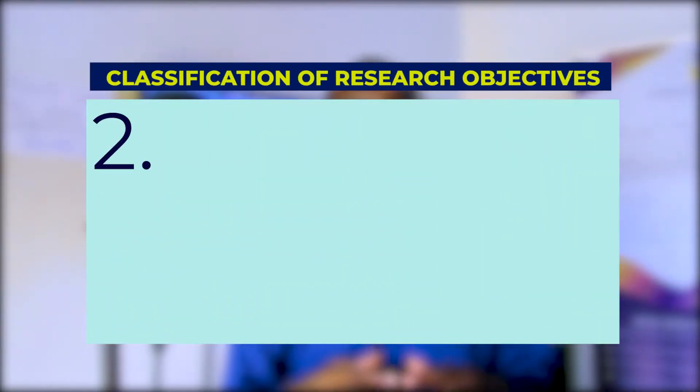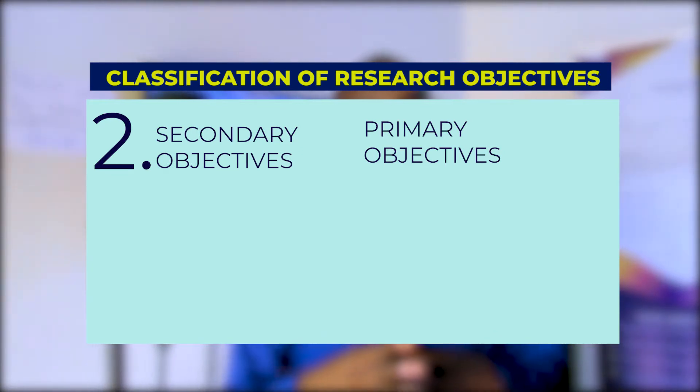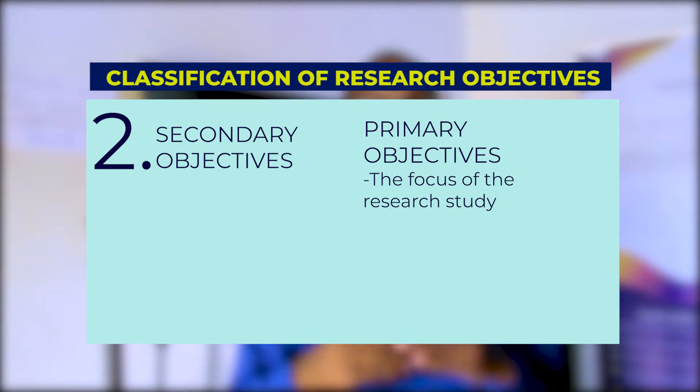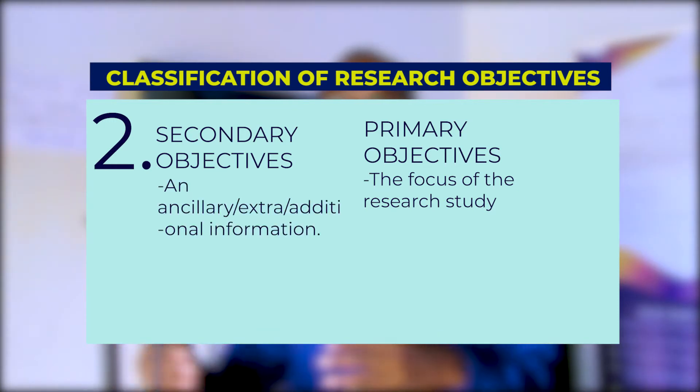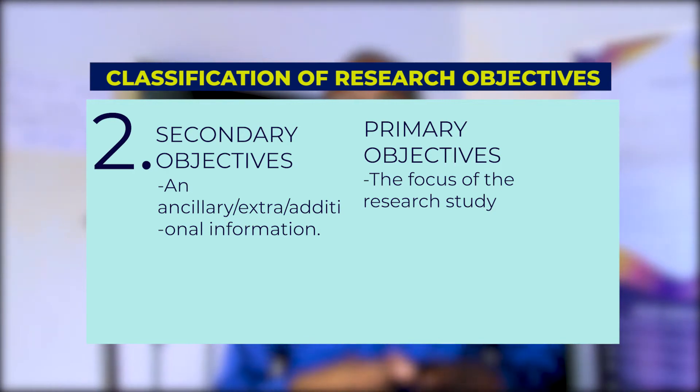Another classification distinguishes primary objectives from secondary objectives. Primary objectives are the main focus of the research study. A secondary objective is an ancillary or additional objective — extra information that is not the main focus. For instance, looking at the effect of welfare on performance could be a secondary objective when your primary focus is remuneration.